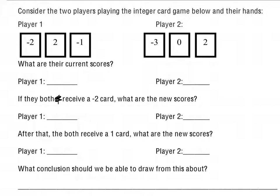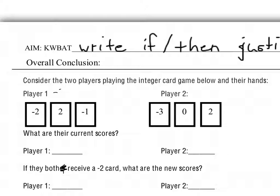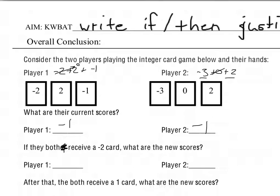We have two players, and they both have these sets of cards. Go ahead and figure out their current scores. We have negative 2 plus 2 plus negative 1 — these add up to 0, so 0 plus negative 1: Player 1 has negative 1. Player 2 has negative 3 plus 0 plus 2; the plus 0 doesn't change anything, so negative 3 plus 2 also gives us negative 1. Both players are on equal footing.